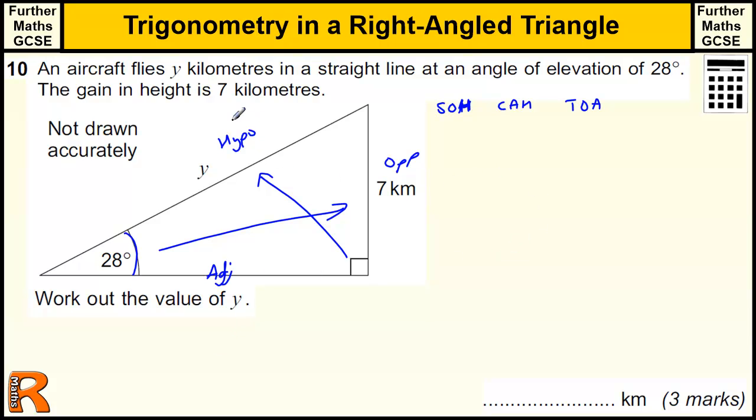We are using the hypotenuse and the opposite, so that is the sine formula. The formula in full is sine of the angle x equals the opposite side over the hypotenuse. Usually in this sort of question you get one mark for just picking out the right formula.